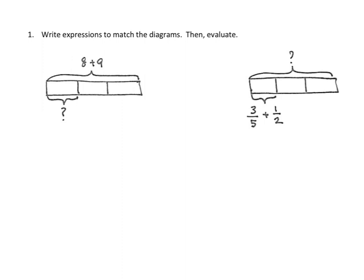Let's look at the first tape diagram. The whole here is given as an expression — that's 8 plus 9, or the sum of 8 and 9. Then we have to break it down into three equal parts. So let's write the expression. We have 8 plus 9 times 1 third. We have to find the sum of 8 and 9, then multiply it by 1 third.